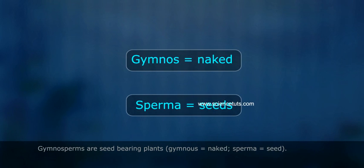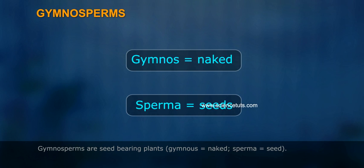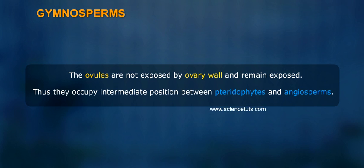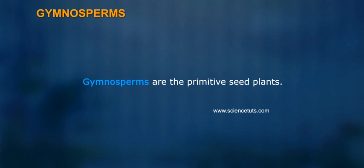Gymnosperms are seed-bearing plants. Gymnas means naked; Sperma means seed. The ovules are not enclosed by an ovary wall and remain exposed. Thus, they occupy an intermediate position between pteridophytes and angiosperms. Gymnosperms are the primitive seed plants.